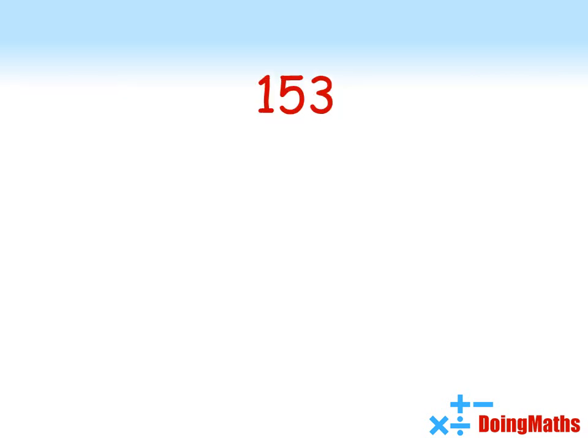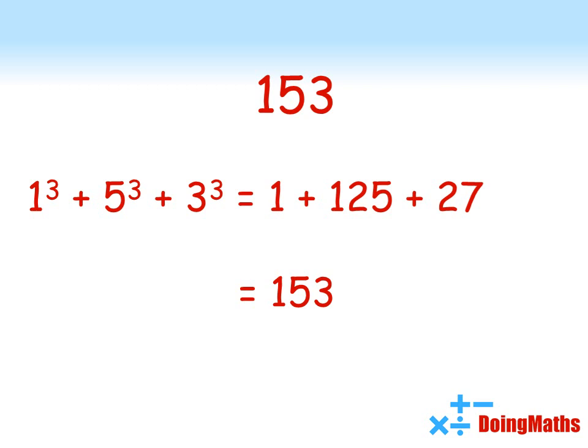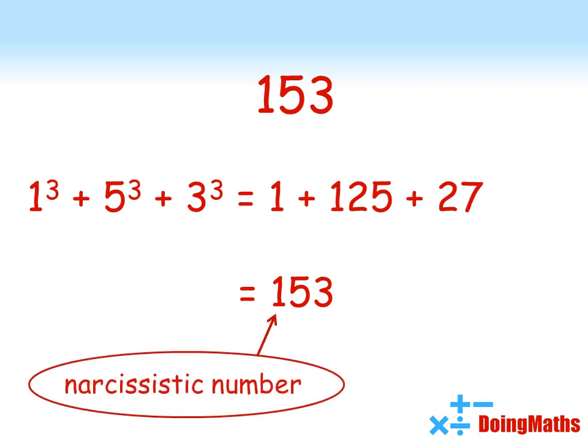So this will be a lot easier to understand if we look at an example. Let's take 153. If we take those three digits, 1, 5 and 3, now there are three digits in 153, so we're going to cube each of them, which gives us 1, 125 and 27. If we add them together, we get 153, back where we started. This makes it a narcissistic number.